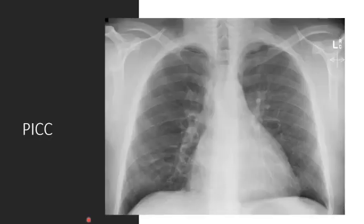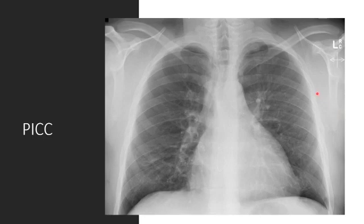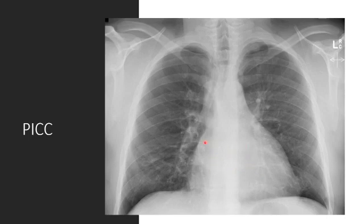This chest x-ray demonstrates a broken PICC line. A PICC is a peripherally inserted central catheter that usually comes in from one of the upper extremities. This one is heading up through the axillary vein, and you can see a large break through the catheter. It should extend through the subclavian, brachiocephalic, and then down towards the superior vena cava, terminating at the cavoatrial junction. This patient also underwent transverse sternotomy in the past.